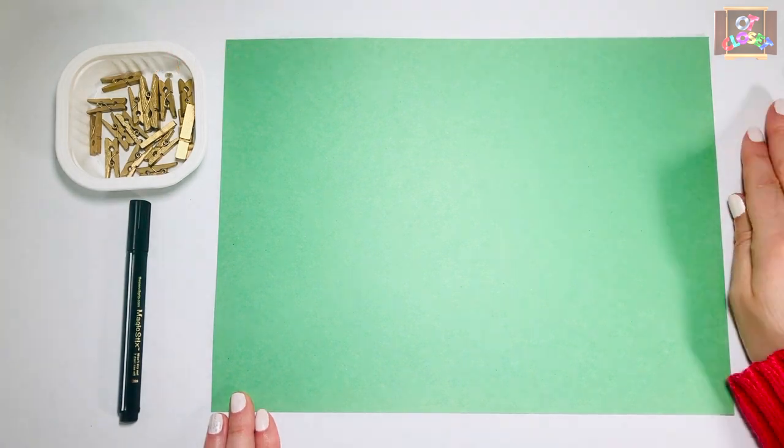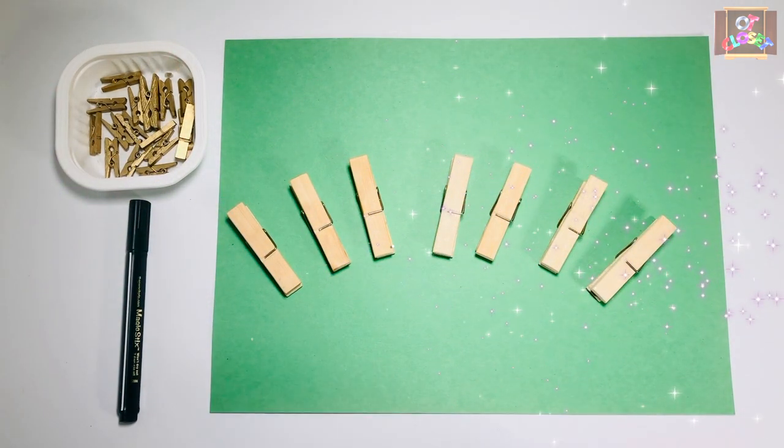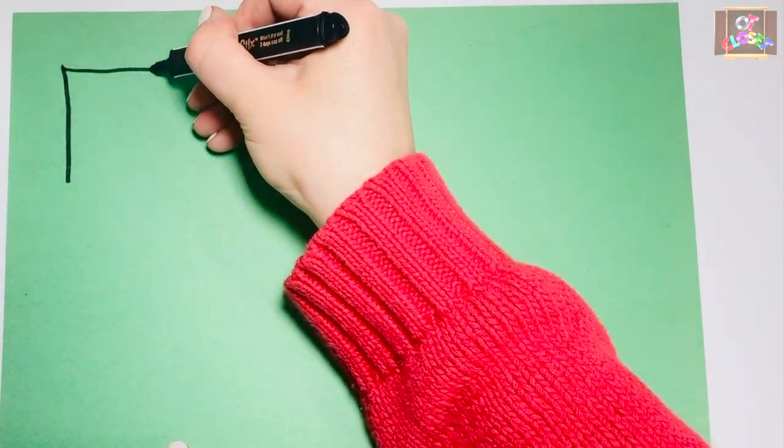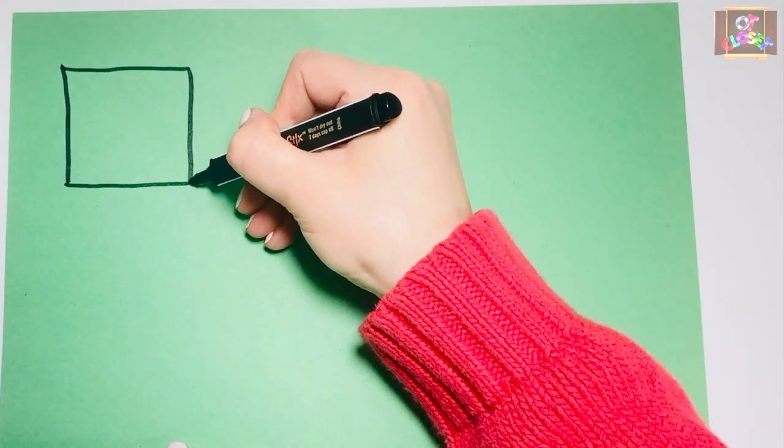Let's make some shapes for activity number five. You will need marker, paper, and large or small clothespins. Draw the shape on the paper and make it using the clothespins.